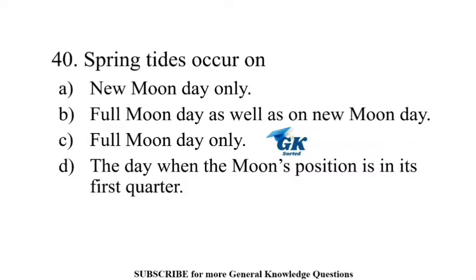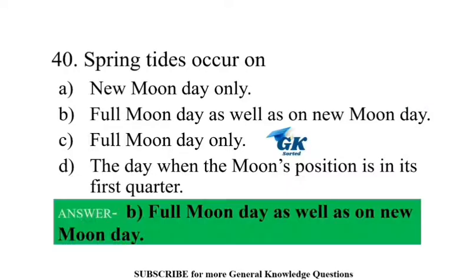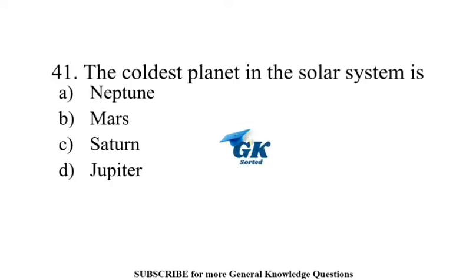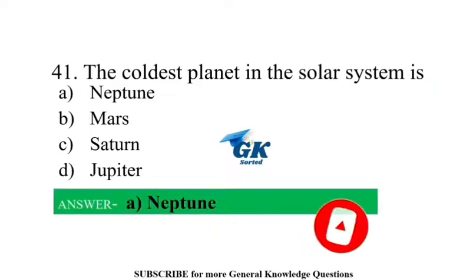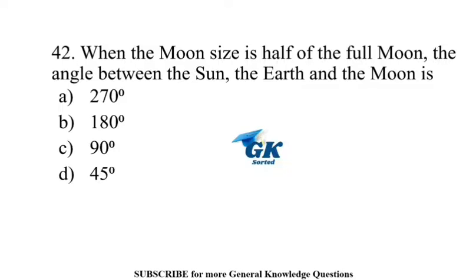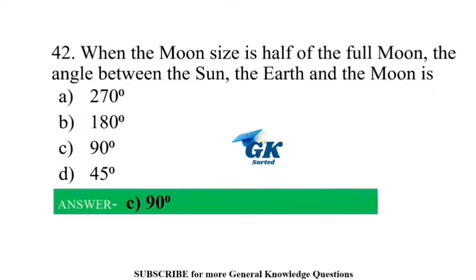Spring tides occur on full moon day as well as on new moon day. The coldest planet in the solar system is Neptune. When the moon size is half of the full moon, the angle between the sun, the earth and the moon is 90 degrees.